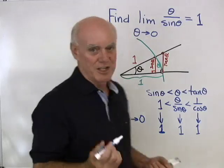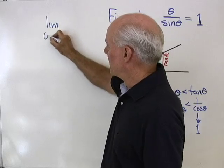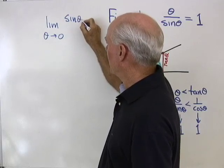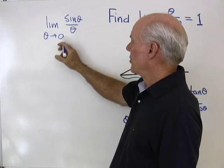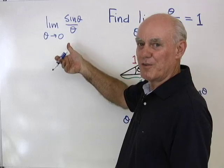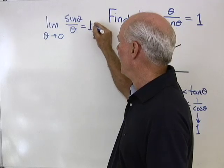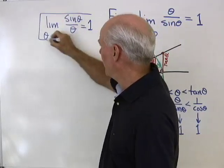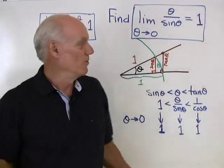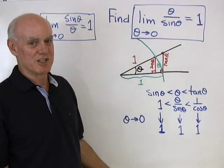There's one more limit we get from this. The limit as theta goes to zero of sine theta over theta — the reciprocal of what we just found. Since theta over sine theta goes to one, its reciprocal sine theta over theta must also go to one. So we get two important limits: whether it's theta over sine theta or sine theta over theta, as theta goes to zero, both limits equal one.